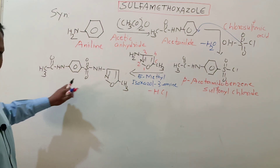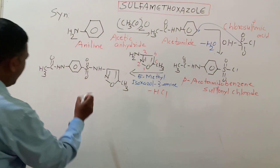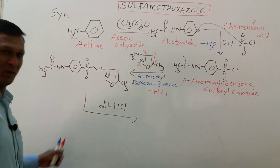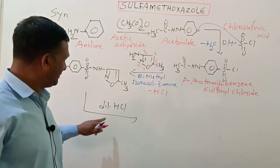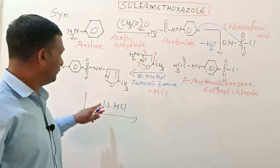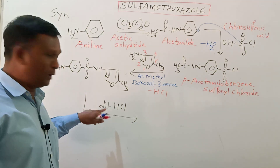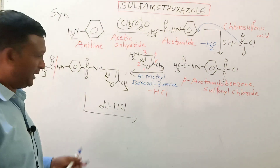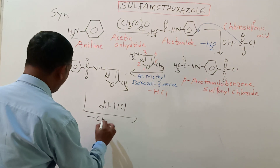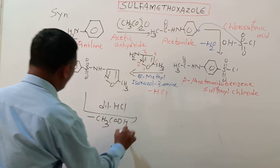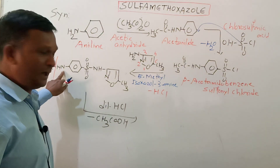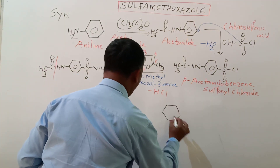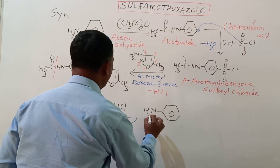This intermediate is then treated with dilute hydrochloric acid — a mixture of HCl and water. The water brings about hydrolysis of the amide bond, releasing acetic acid and liberating the free amino group, giving us the titled compound sulfamethoxazole.